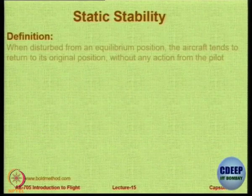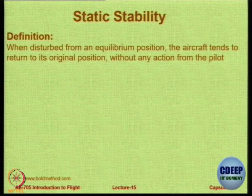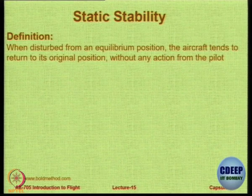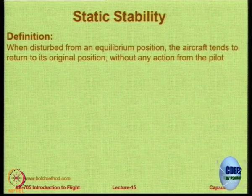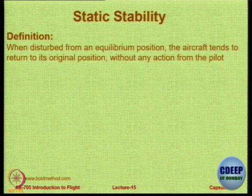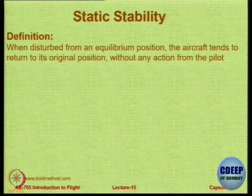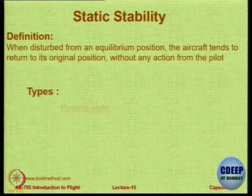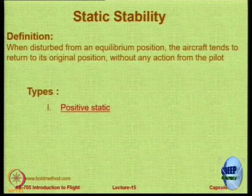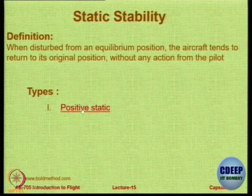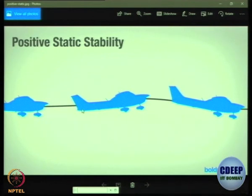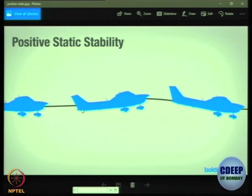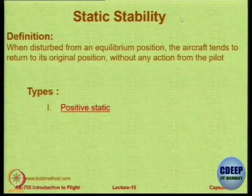Static stability is only a function of the initial reaction — the tendency, not the final outcome. When you disturb an aircraft from a trimmed or equilibrium position, if it tends to return — it need not actually return finally, but at least the tendency is to return — then we call it a statically stable aircraft. This is positive static stability: the aircraft is disturbed, pitches up slightly, and the initial tendency is to come back down.